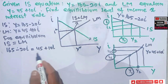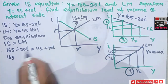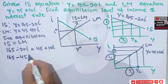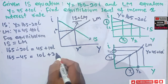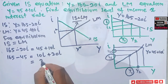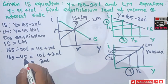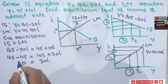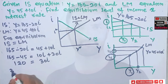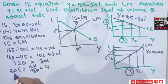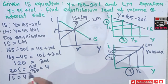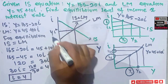Solving for I: transposing terms, we get 165 − 45 = 10I + 20I, which gives 120 = 30I, so I = 120 ÷ 30 = 4. Therefore, the equilibrium rate of interest is 4.